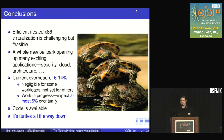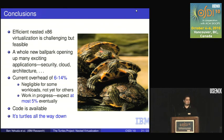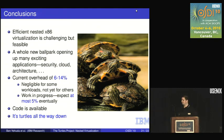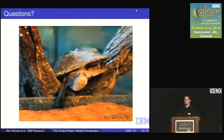Why is it called the Turtles Project? They tell a story about a scientist — some say Bertrand Russell — giving an astronomy talk in London, discussing how the Earth revolves around the Sun. At the end, a little old lady stood up and said, 'Everything you've told us is rubbish, young man. Everyone knows the Earth is a flat disk on top of a turtle.' He smiled and asked what the turtle was standing on. She said, 'You're very clever, young man, but it's turtles all the way down.'